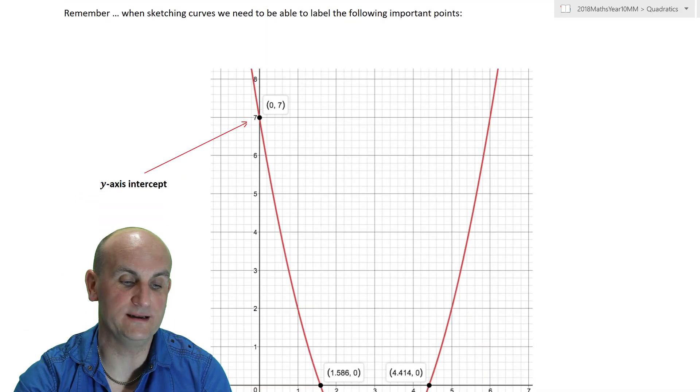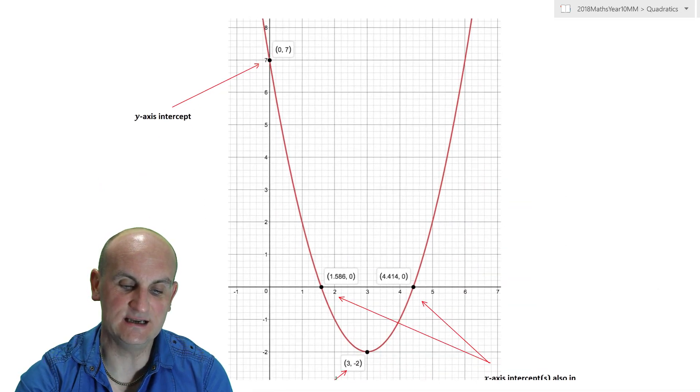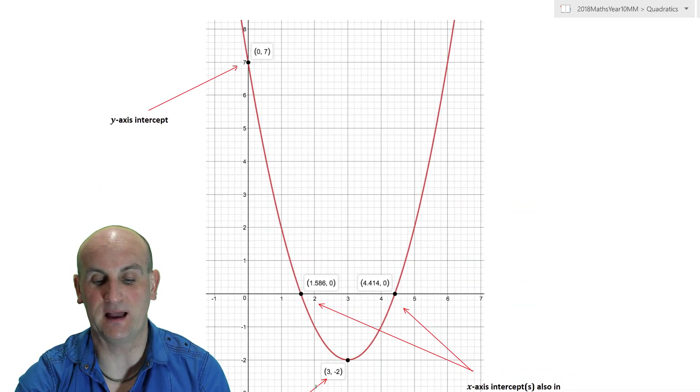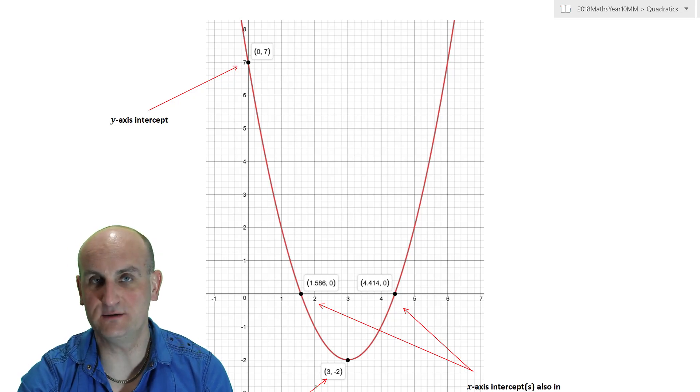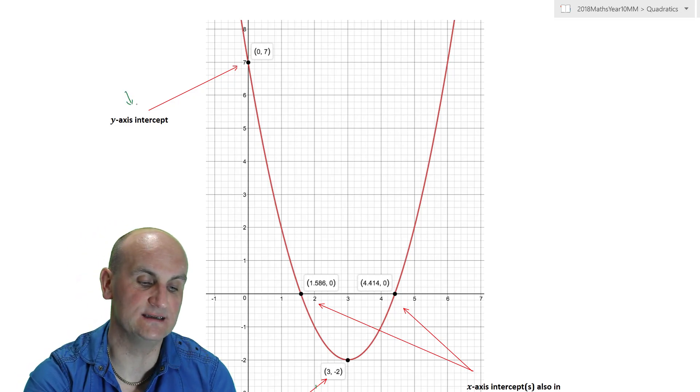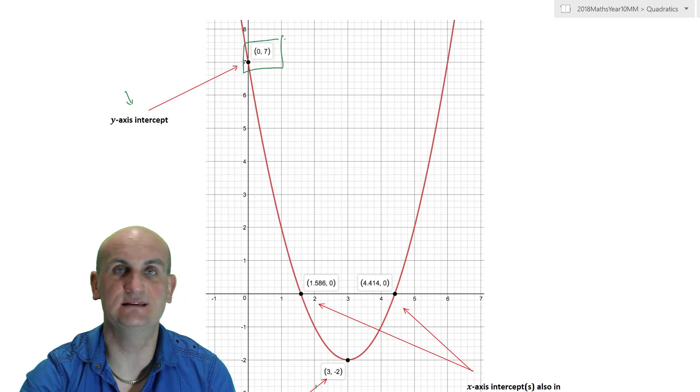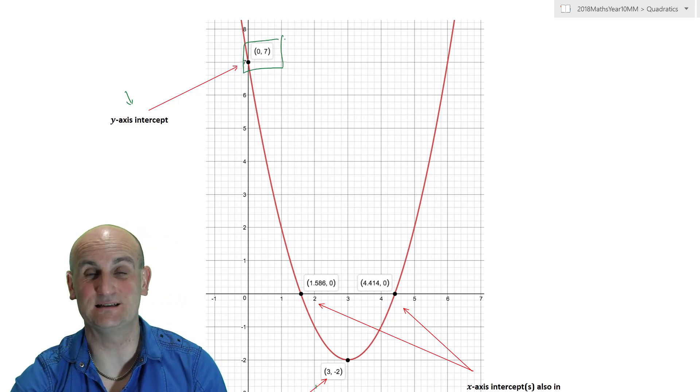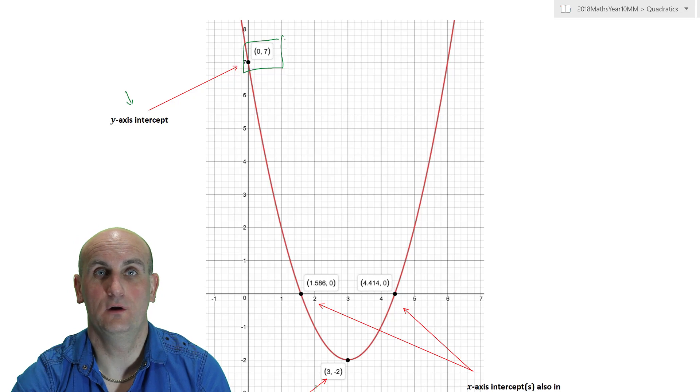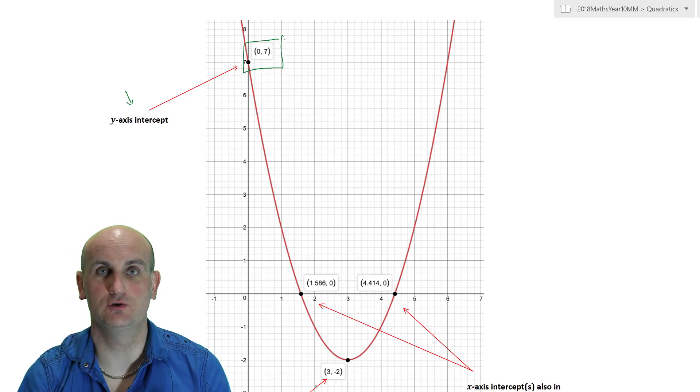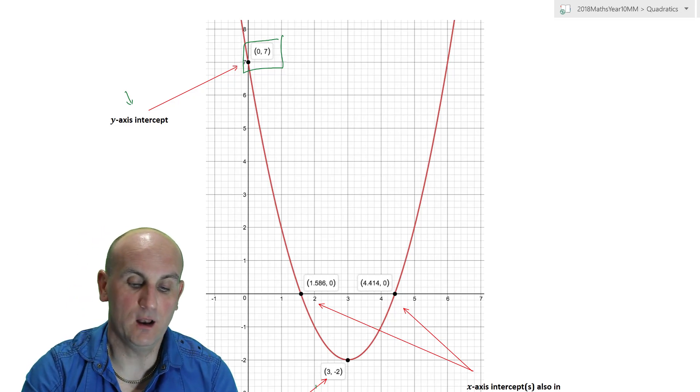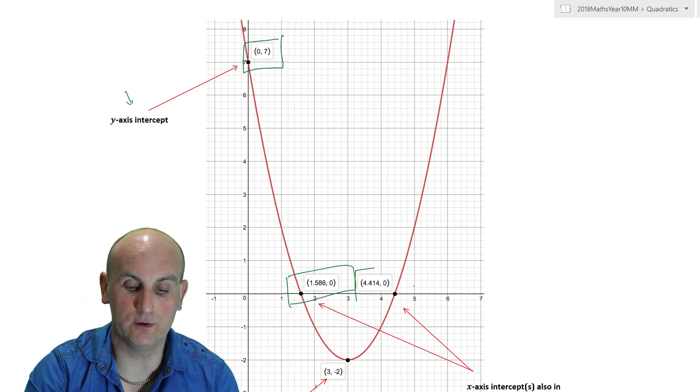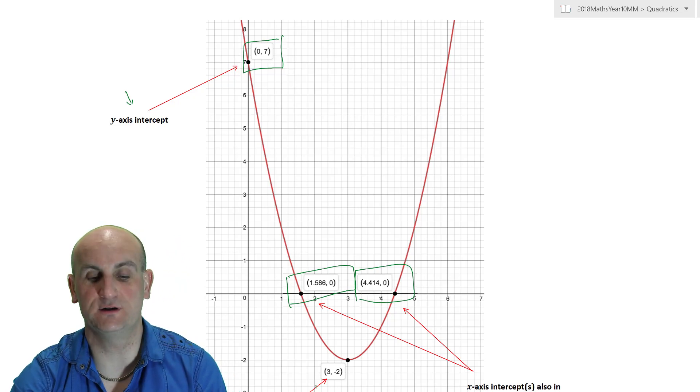Now, while completing the square is useful, it's not necessarily just completing the square. As I've said, we're at some point going to have to sketch these things. To be able to sketch them, I need four pieces of information. My y-axis intercept, and you'll notice it's given us a coordinate. Please, for every graph you draw, where you have important points or important information, just make sure you write the coordinate. Not just 7, 0, 7. Likewise, here, you'll notice I have a coordinate, and a coordinate there, where it's crossing the x-axis.